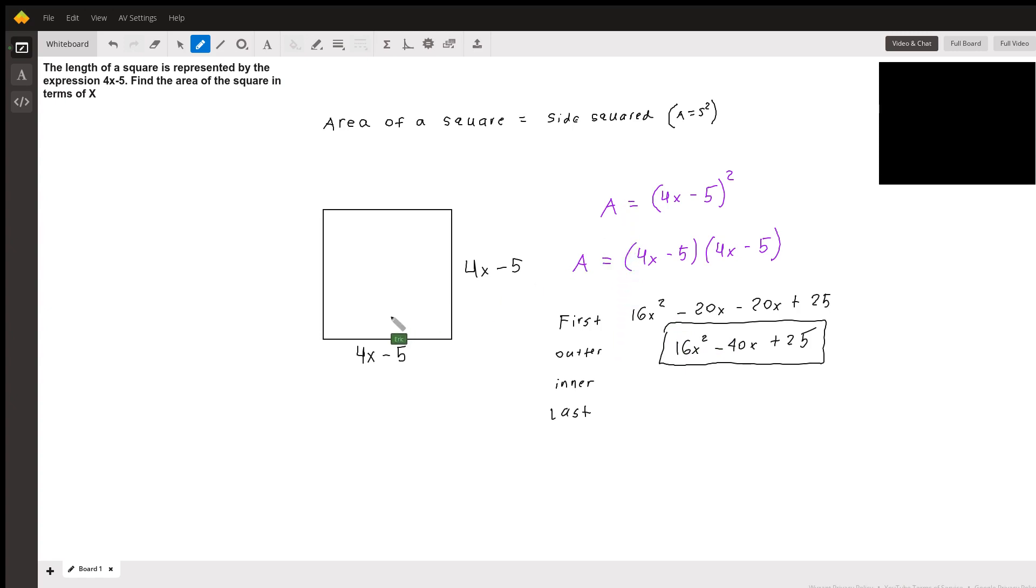But there is a shortcut if you're comfortable enough with the FOIL method. When you have a binomial squared, I'm going to write this over here. I'm just going to call it trick. This is a cool trick to know. You don't have to use it, it just makes it a little bit faster if you choose to. When you have a binomial squared, any binomial squared, when you're squaring it,